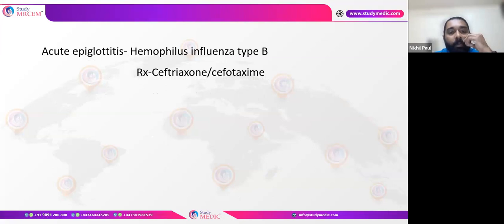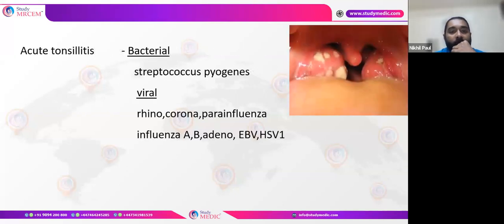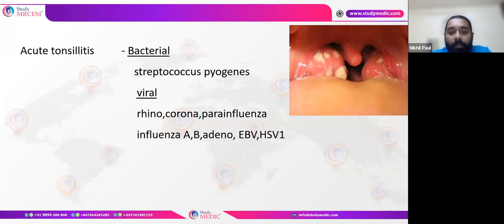Other ENT infections: acute epiglottitis is rarely seen now due to vaccination — caused by Haemophilus influenzae type B, treated with ceftriaxone or cefotaxime. Acute tonsillitis is mostly bacterial, caused by Streptococcus pyogenes, and sometimes viral, caused by rhinovirus, coronavirus, parainfluenza, influenza A or B, adenovirus, HSV-1, or Epstein-Barr virus.